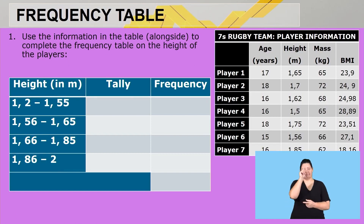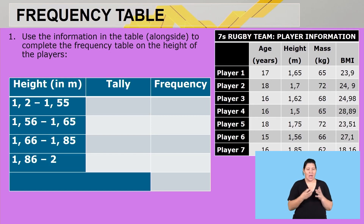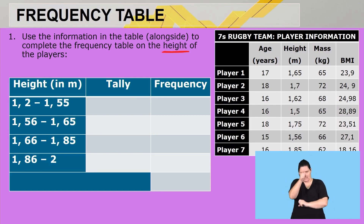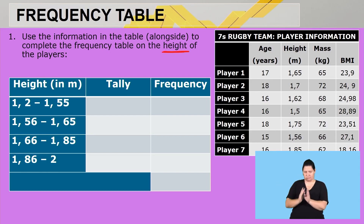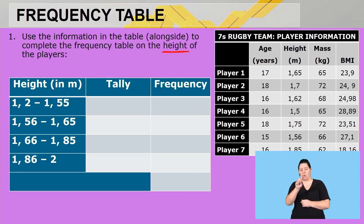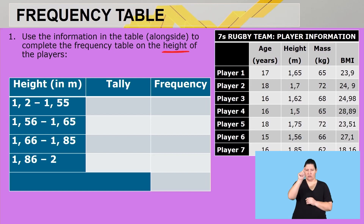We must use this information to complete the frequency table on the height of the players. Remember, even though we have more than one data set, we must focus on height only — not age, not mass, not BMI. We want to know how many players have a height between 1.2 and 1.55 meters.